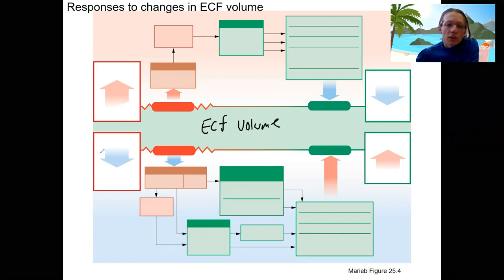And let's start with a decrease in volume. That's what we just diagrammed. So nothing new here. We've got stimulus is decreased volume. Our receptors are going to be baroreceptors, which trigger the sympathetic nervous system, as well as our kidneys.